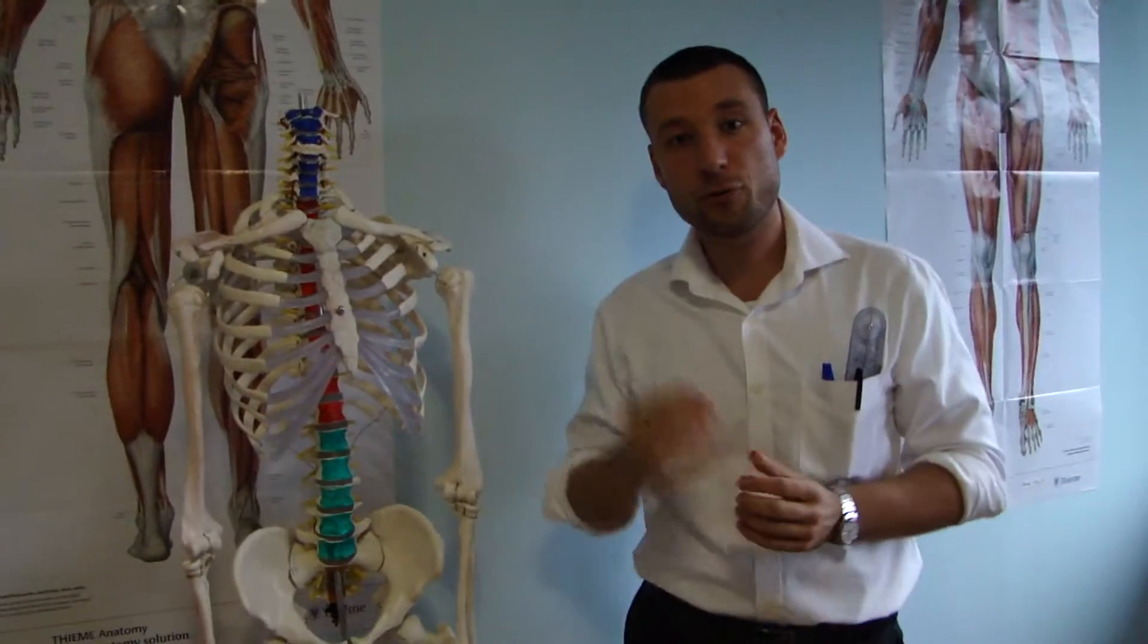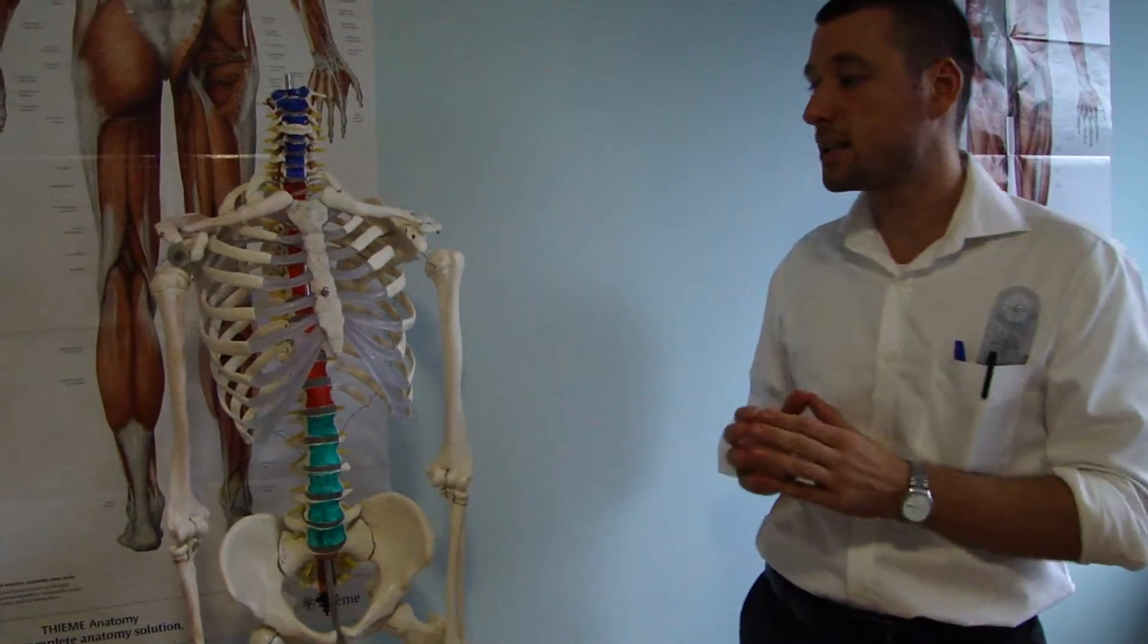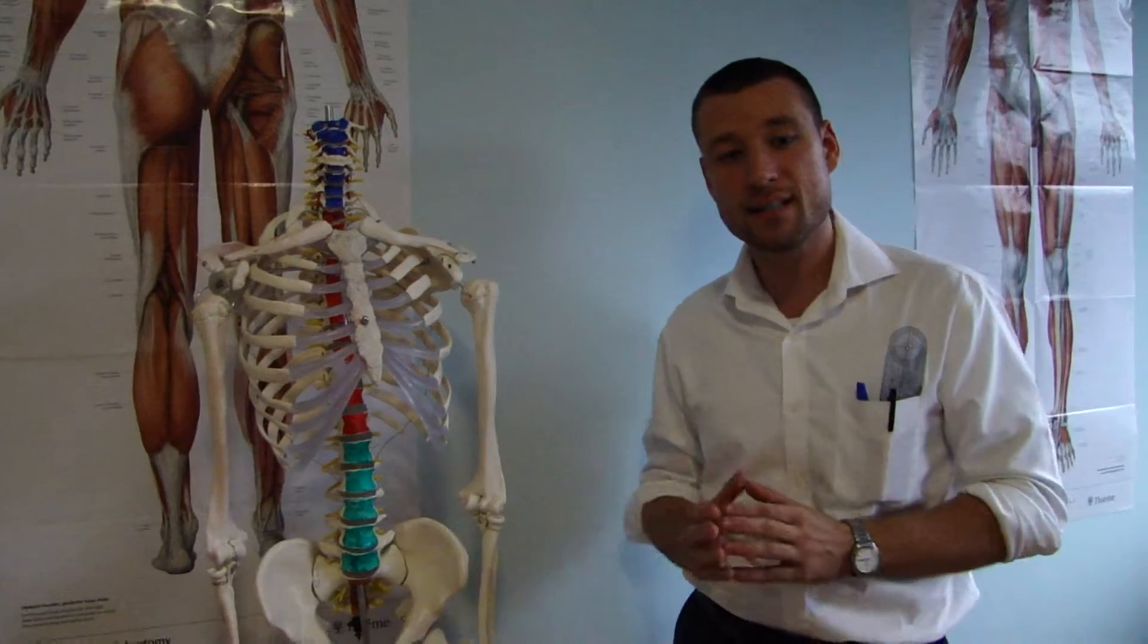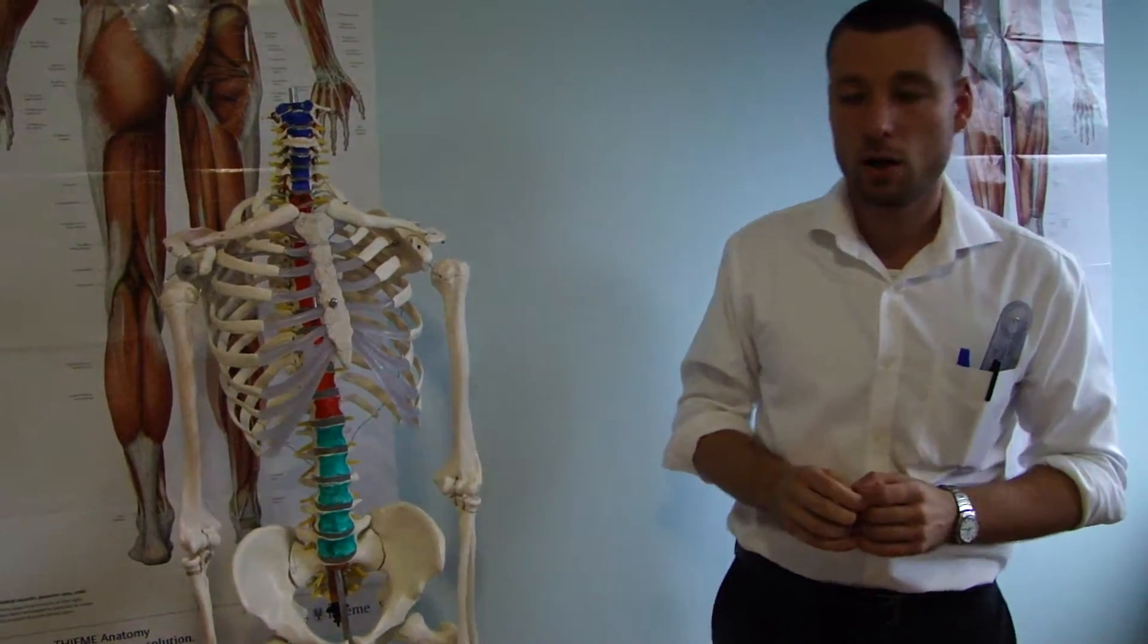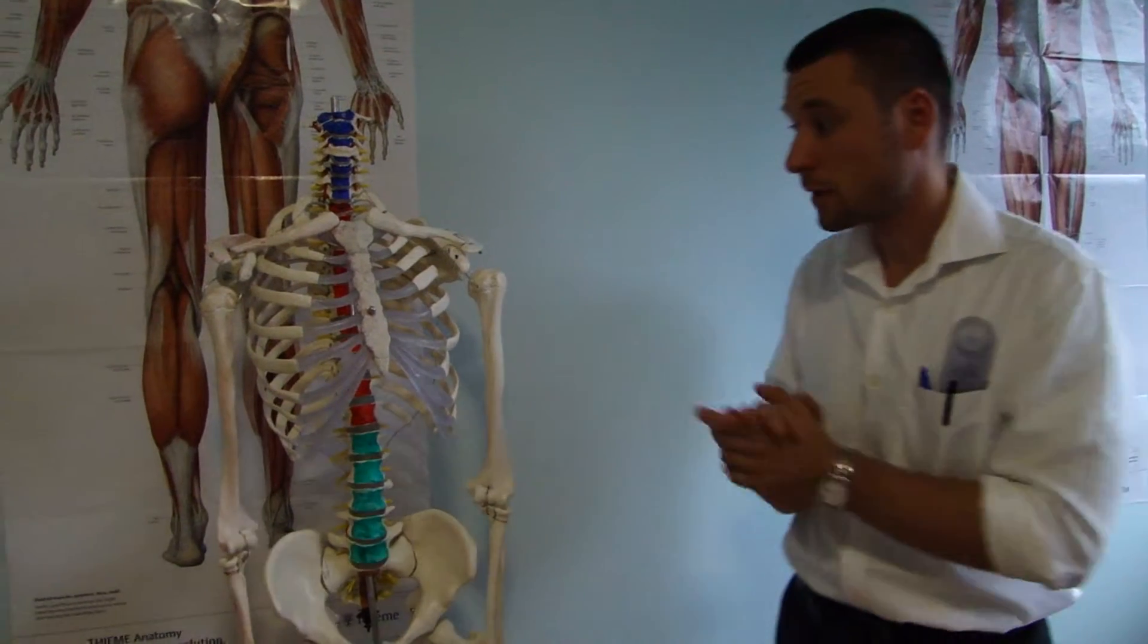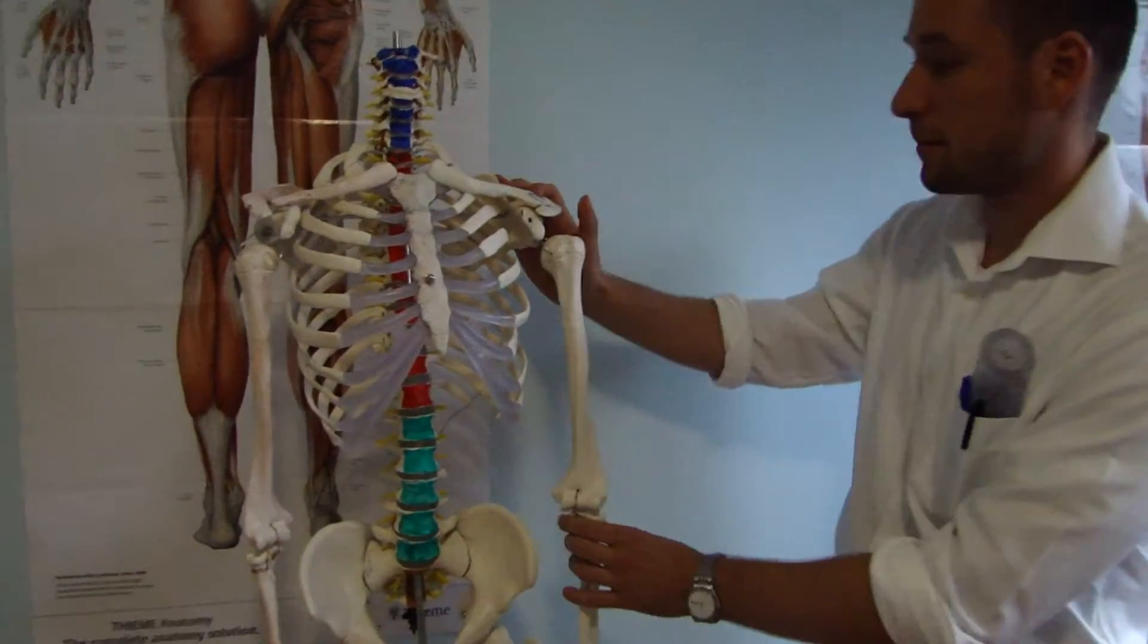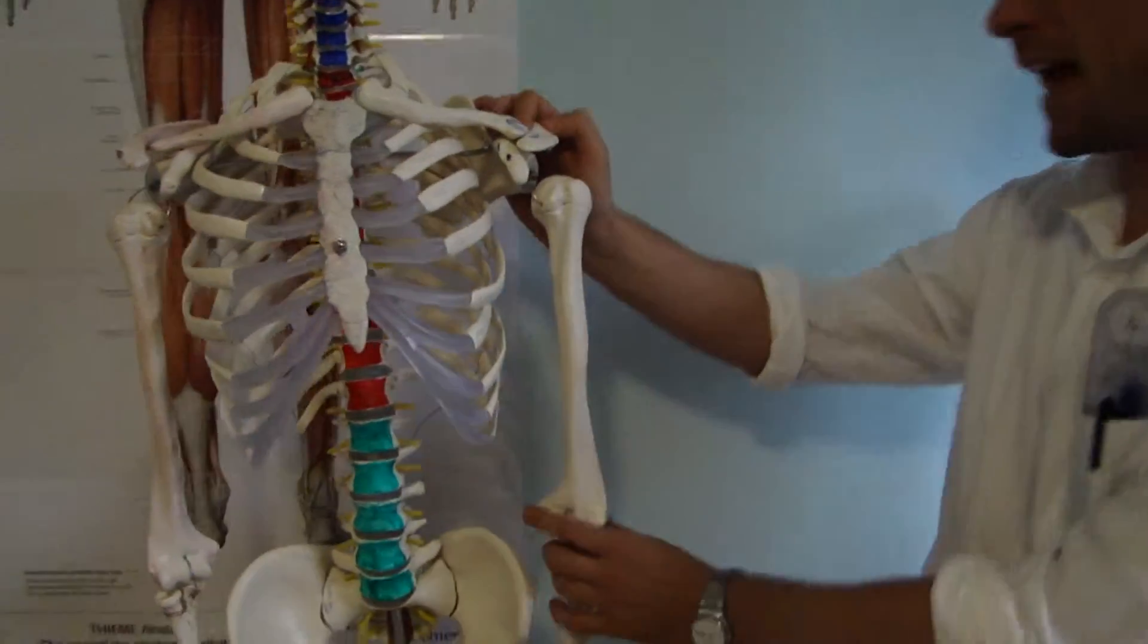So now a little bit about the bursa. Bursa is a fluid-filled sac and it's located where skin rubs over bone and where muscle, tendon or ligament glides directly over the periosteum of bone. Basically it decreases friction during movement. So now let's focus on the muscles and actions.